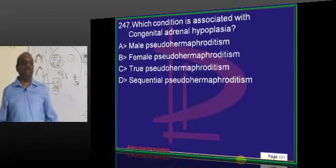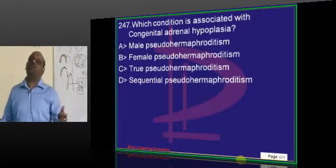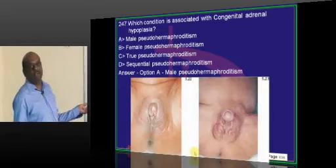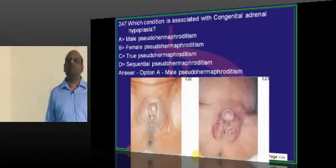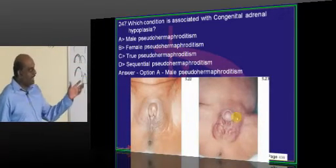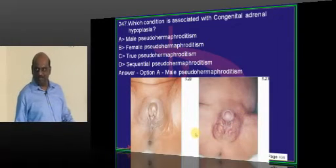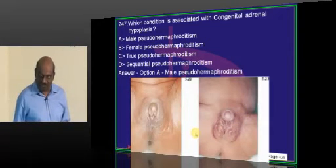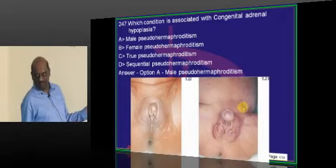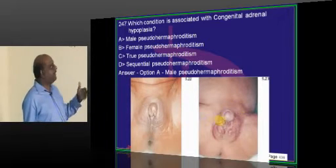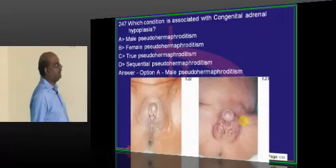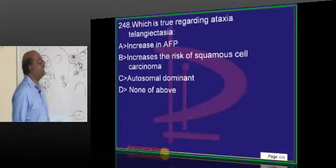Congenital adrenal hyperplasia produces excessive sex steroids leading to female pseudo-hermaphroditism. There will be clitoromegaly due to excessive production of androgens in a female child with female karyotype — that is how pseudo-hermaphroditism develops in congenital adrenal hyperplasia.